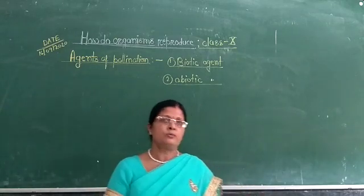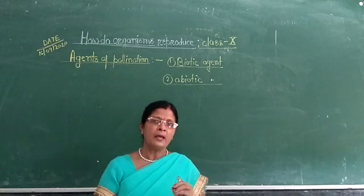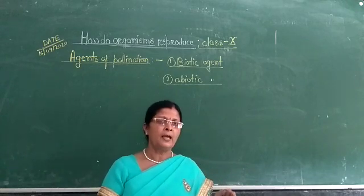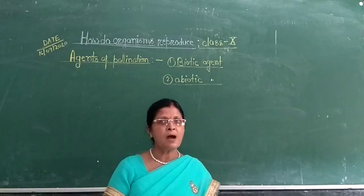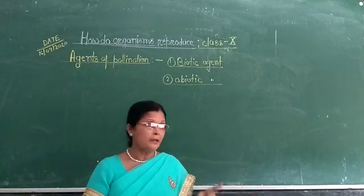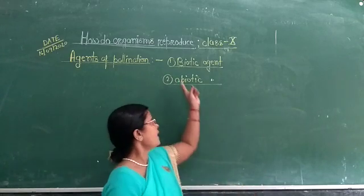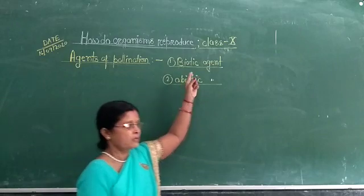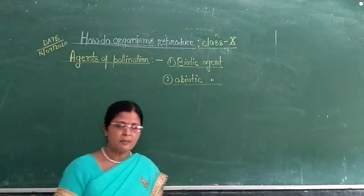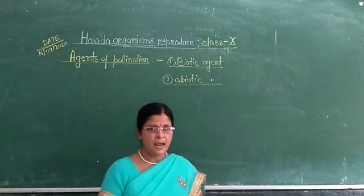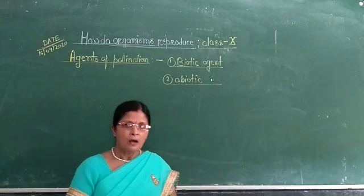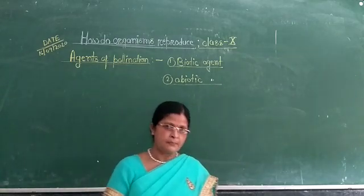These factors are called pollinating agents. They can be biotic factors — such as insects, bats, and many domestic animals — or abiotic factors.